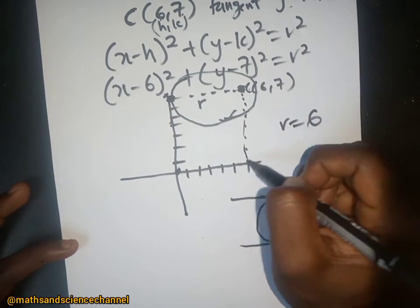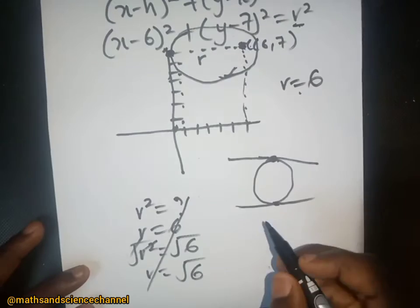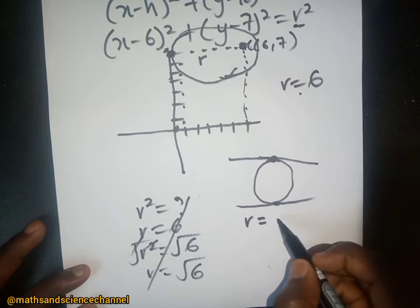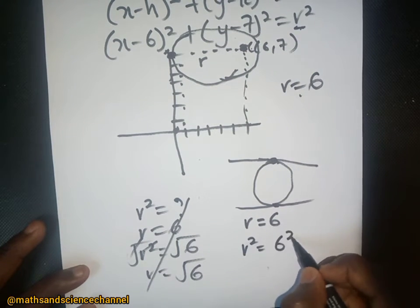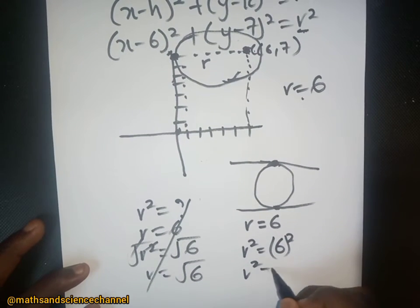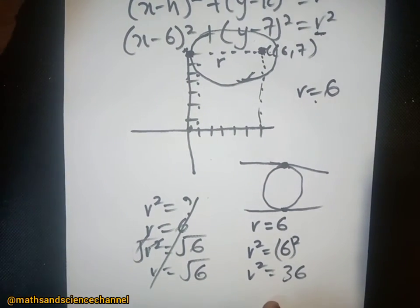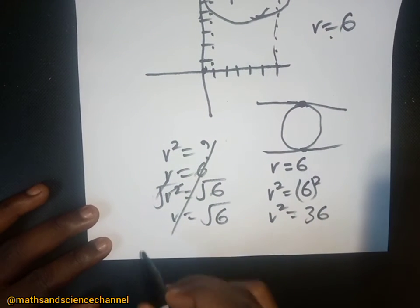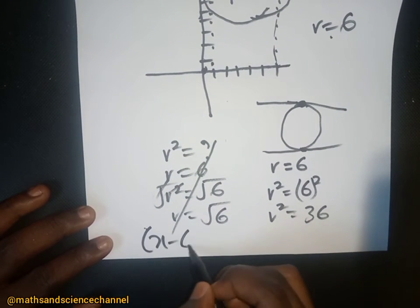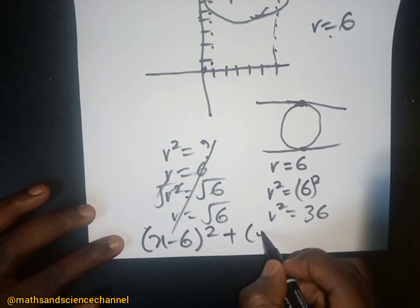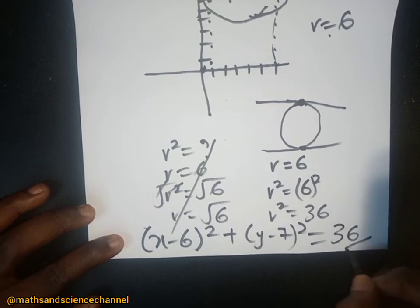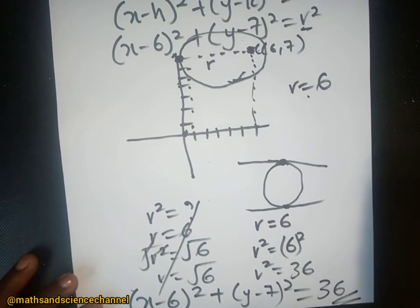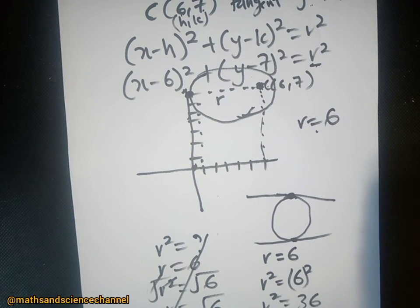So the radius is six, because we are taking the point from the center to the y-axis. Therefore r squared equals 36. The equation of the circle is (x minus 6) squared plus (y minus 7) squared equals 36. That is the equation of the circle tangent to the y-axis with center six and seven.